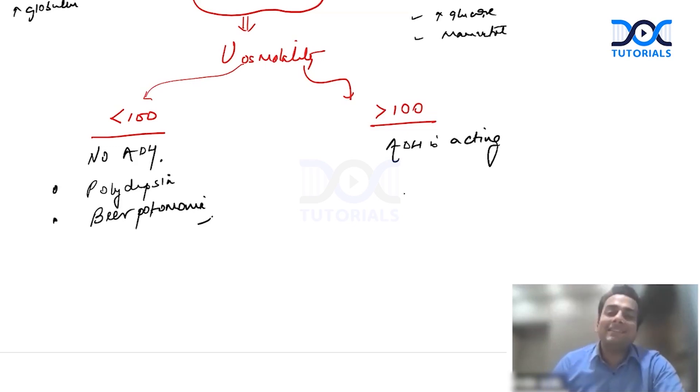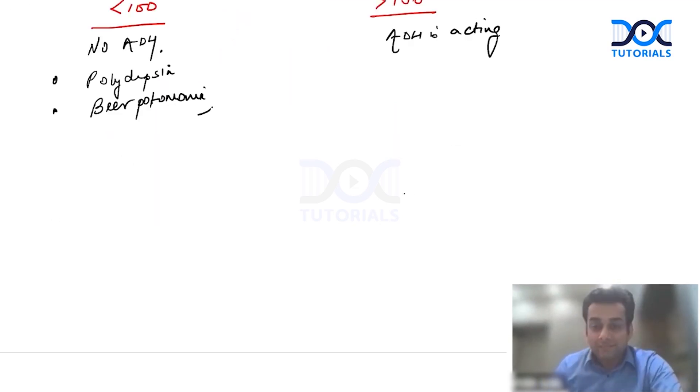But if the ADH is present, that is if the urinary osmolality is more than 100, then the ADH is present. And if the ADH is present, then depending upon the volume status, the patient can be hypovolemic, euvolemic, or hypervolemic, and depending upon the urinary sodium.